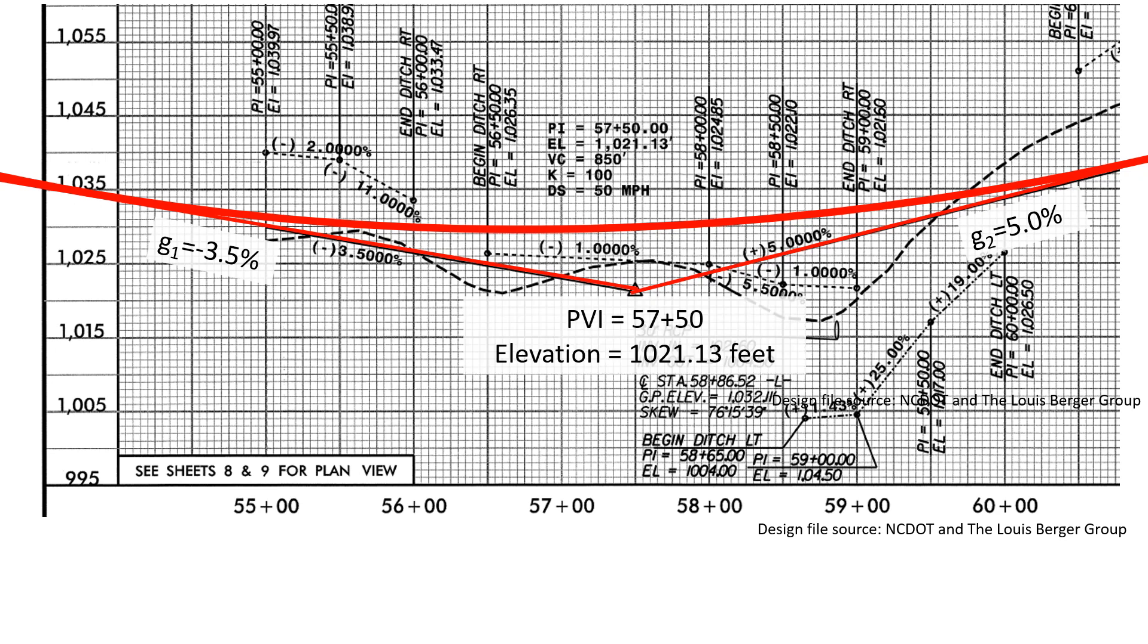We're given information about the PVI here that the PVI is at station 57 plus 50 at an elevation of 1021.13 feet. We also have information about the vertical curve length, it is 850 feet which is 8.5 stations.